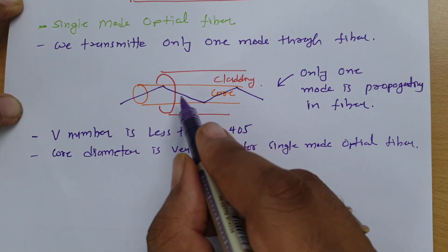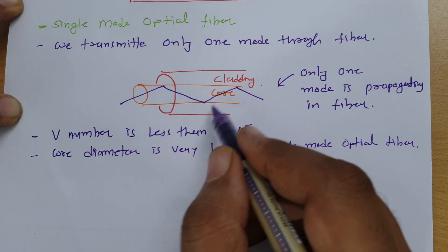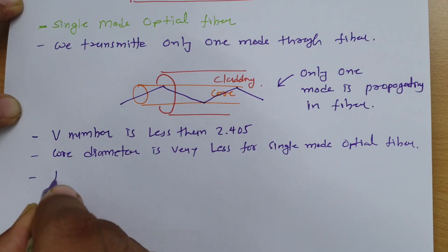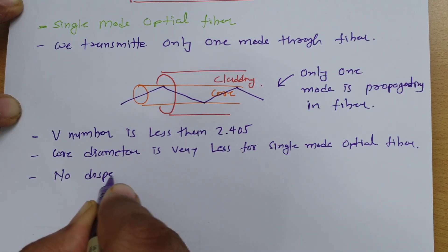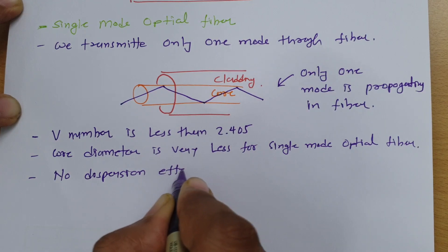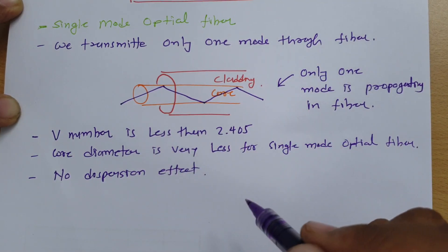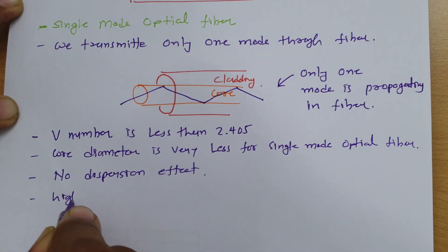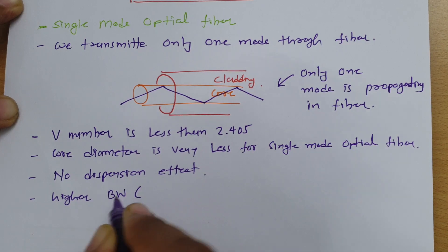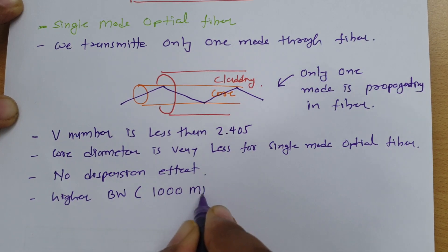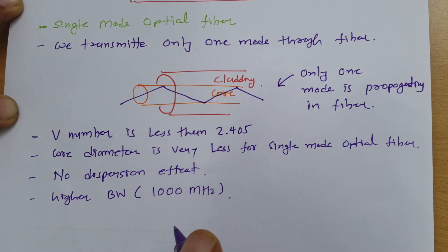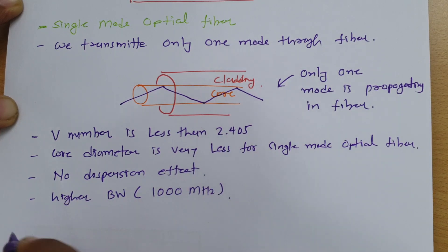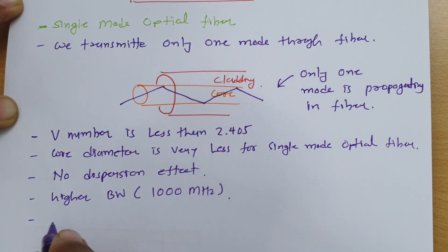In single mode optical fiber, there is no dispersion effect since only one mode is propagating. Because of this, the bandwidth is very high — in the order of thousands of megahertz. Single mode optical fiber is used for long-haul communication.